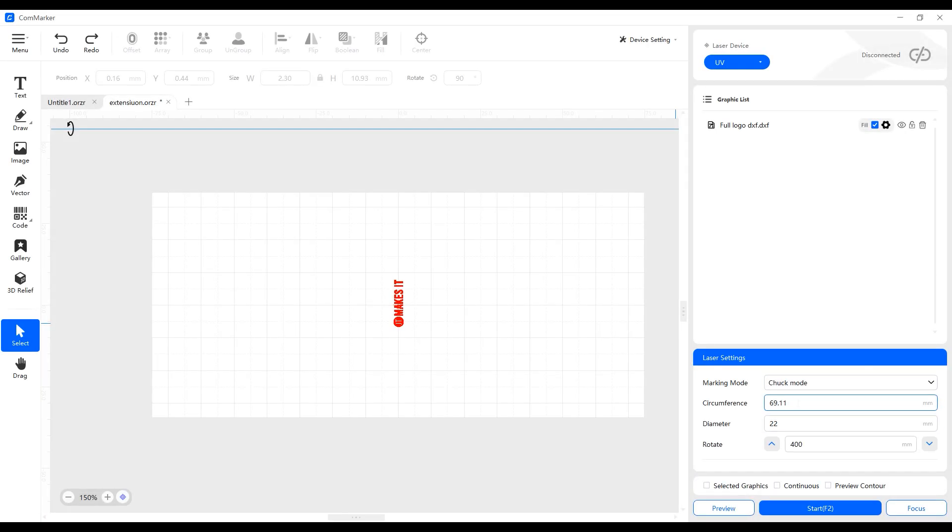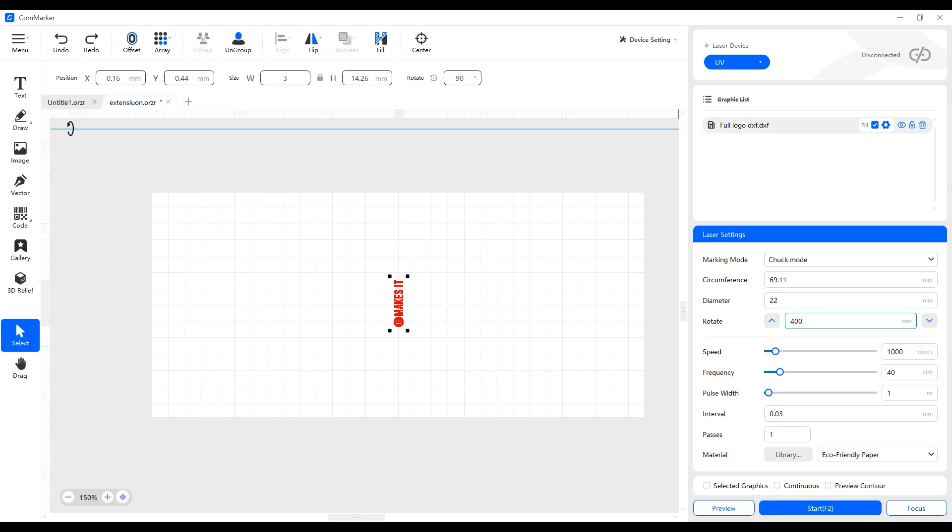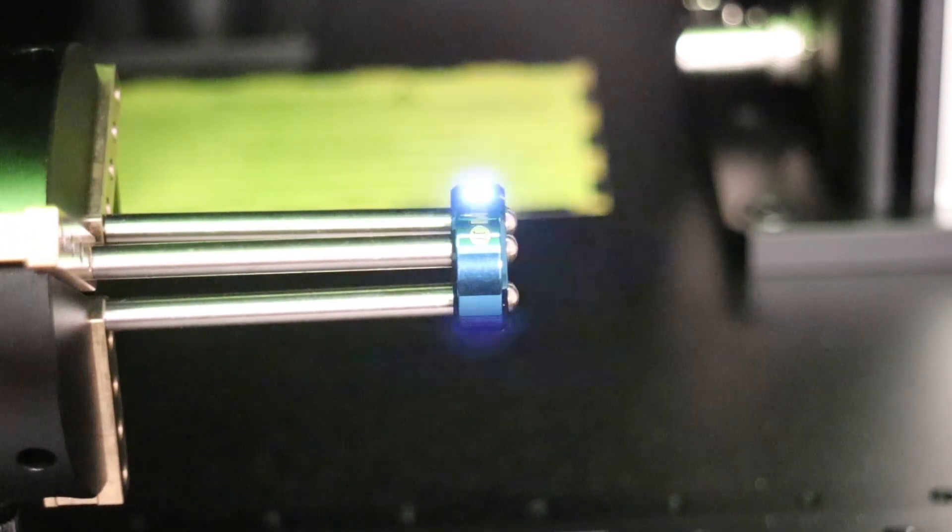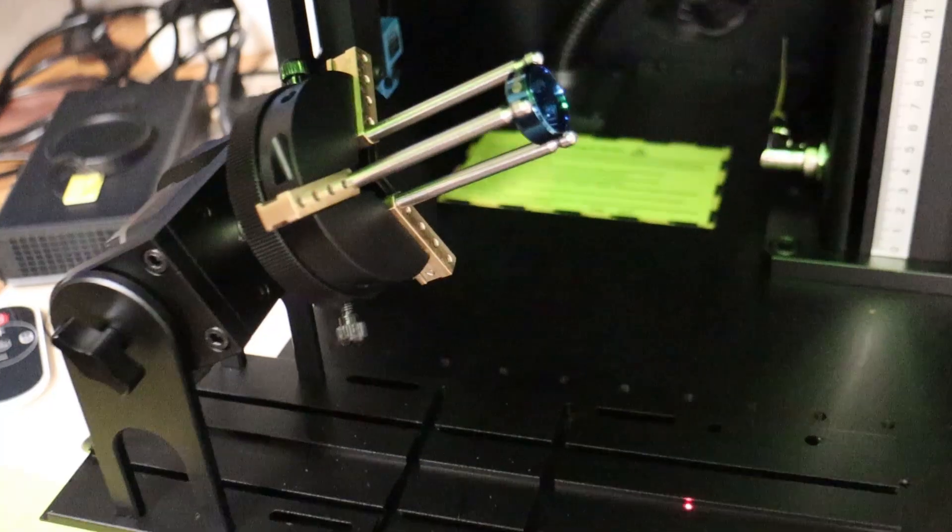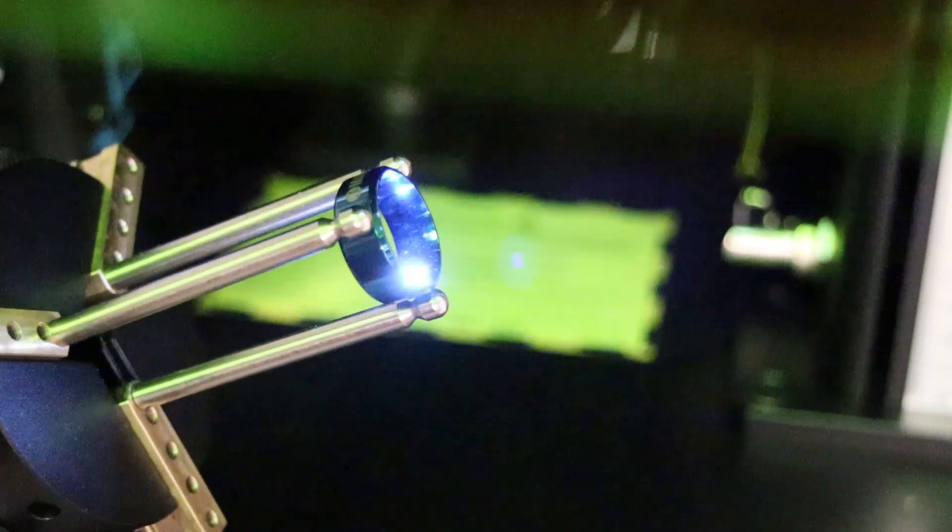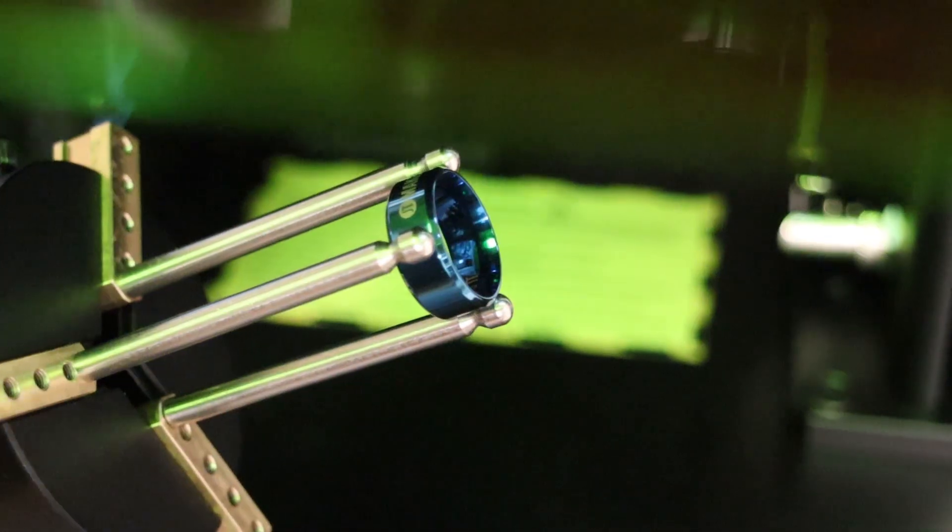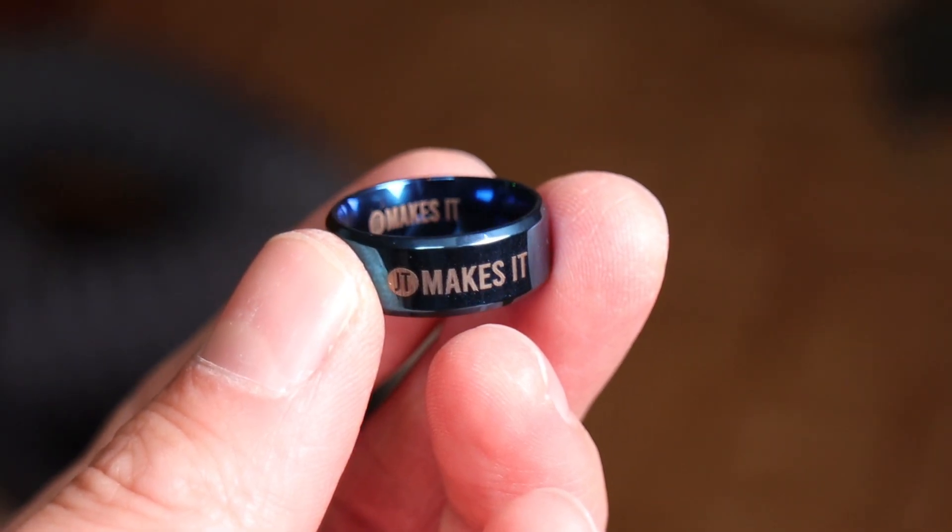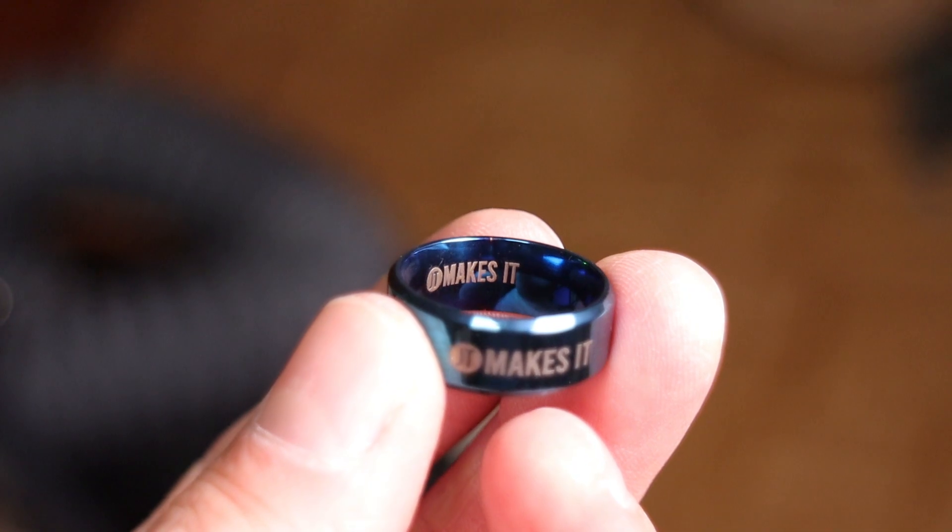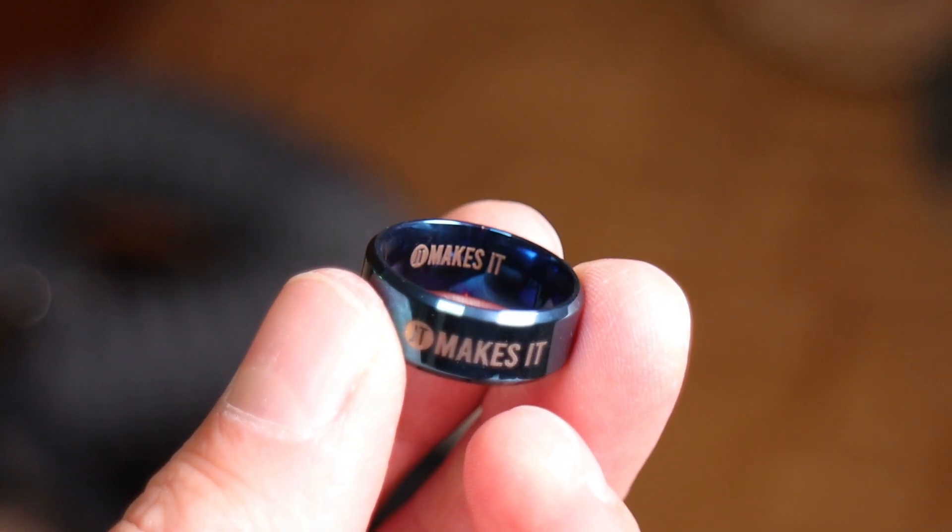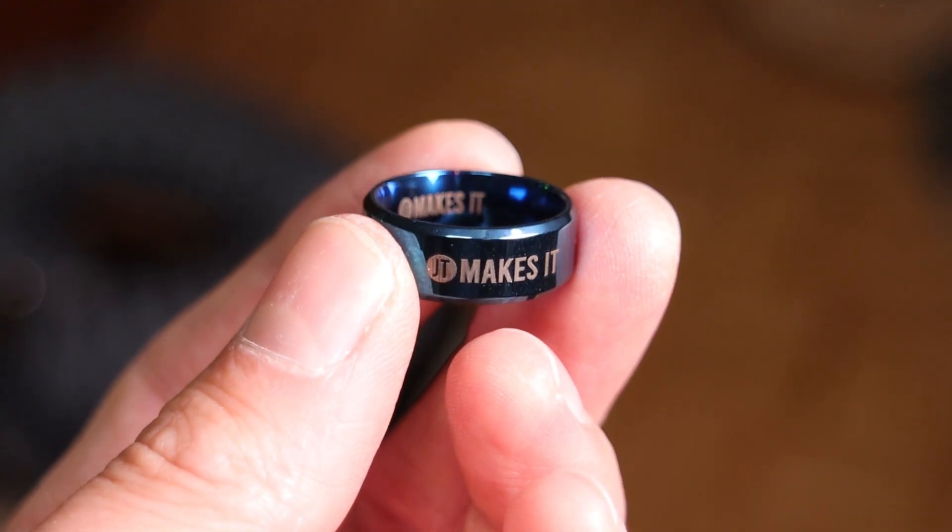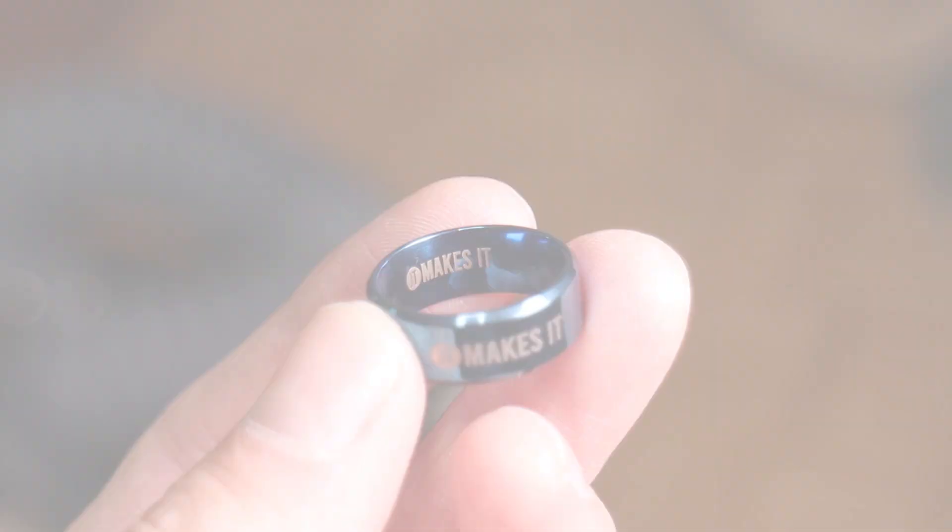Setting it up is simple. Select the chuck engraving mode in the software and enter the diameter of the object you're working with. I engraved a ring using the precision jaws, starting with the outer surface, and then tilted the chuck to engrave the inside. The engravings are incredibly sharp and detailed, demonstrating the high level of precision this rotary system is capable of. Combined with the Omni X, this accessory significantly expands the machine's capabilities and makes it well-suited for advanced engraving work.